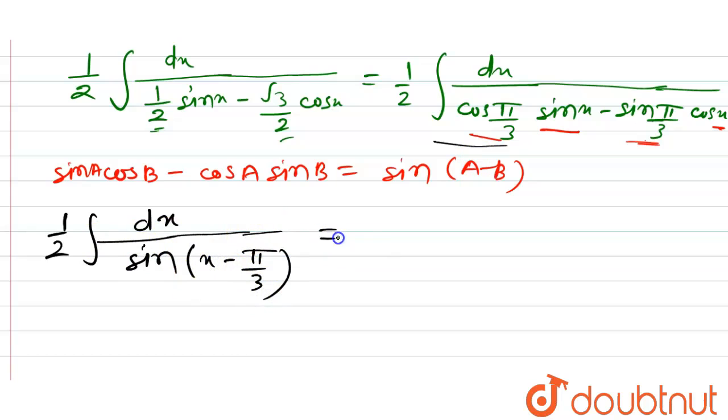Now, we can write this as 1 by 2 into integral, sin of x minus pi by 3 can be written as cosec of x minus pi by 3, into dx.